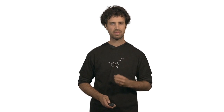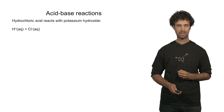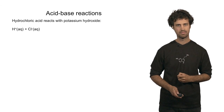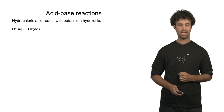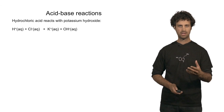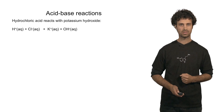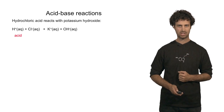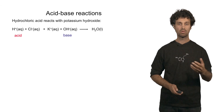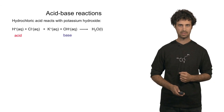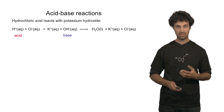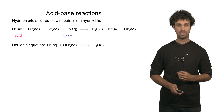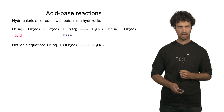Now let us look at some basic acid-base chemistry. Let's look at hydrochloric acid reacting with potassium hydroxide. In solution, hydrochloric acid produces protons and chlorine anions. Potassium hydroxide produces potassium ions and hydroxide anions. The proton is the acidic species and the hydroxide anion is the basic species. These two can interact to form water. In addition, we have spectator ions — potassium and chlorine. We can rewrite this reaction in the form of the net ionic equation, where protons interact with hydroxide anions to form water.